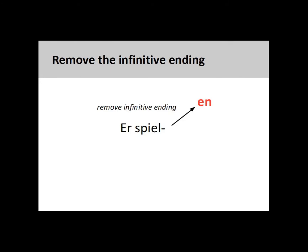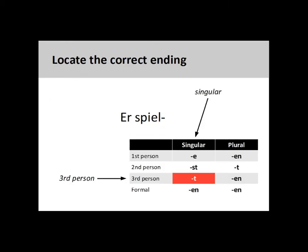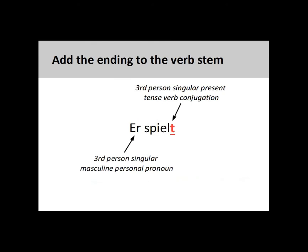To conjugate a verb, you first remove its infinitive ending. The next step is to determine both the number and person for the subject of the verb. Here the subject is the third person singular masculine personal pronoun, 'he.' We then need to find the correct third person singular verb ending on the chart — here the correct ending is marked in red. Once that is done, we simply add that ending to the verb stem to produce 'er spielt,' he plays. Both the subject and verb are in third person singular, creating subject-verb agreement.